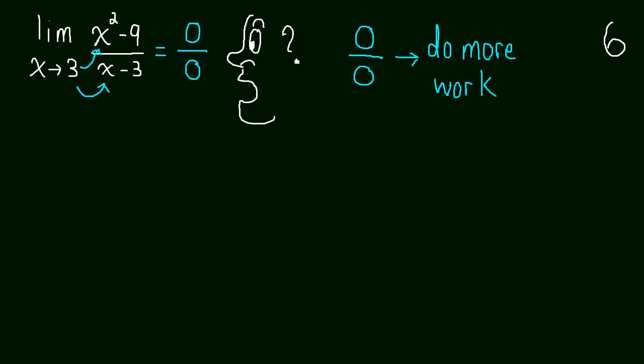So do more work. You should have some inkling that this problem is not done. So we have to do some algebra to this limit, the limit as x approaches 3 of x squared minus 9 over x minus 3. So let's start thinking about what we can do. We have this limit, and I'm just going to rewrite it down here.